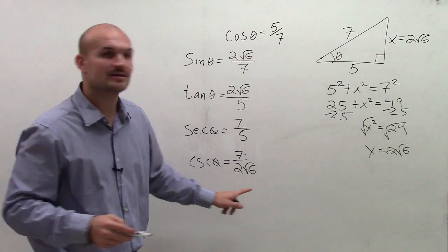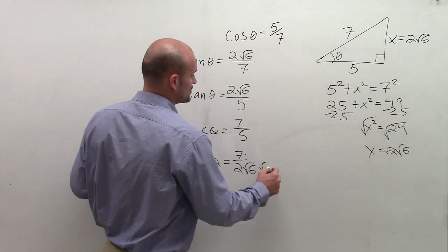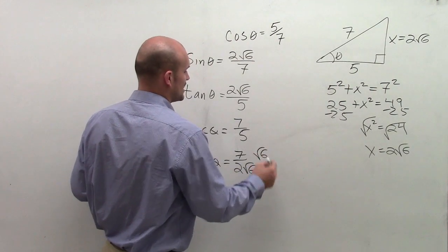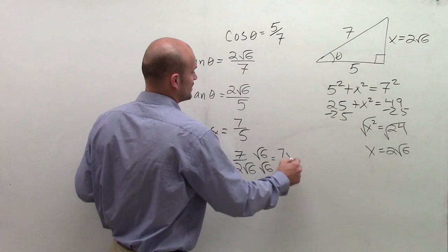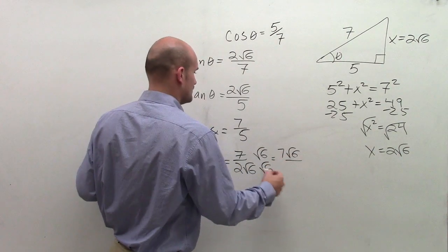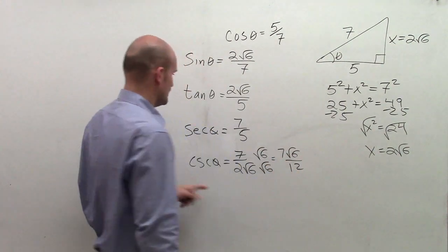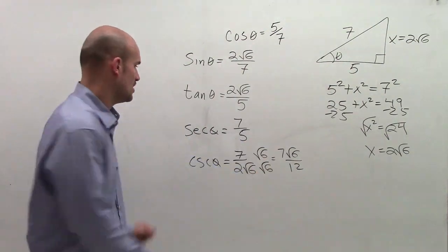Now, remember, we can't have a square root on the bottom. So I'm going to reduce by rationalizing the denominator to give me 7 radical 6 divided by 12. As square root of 6 times square root of 6 is 6, 6 times 2 is 12.